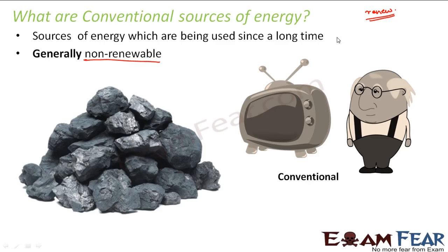For example, one good example of a conventional source is coal. Once you burn coal you get a lot of heat energy, but the coal that you have burnt is gone — you cannot recycle or reuse it. Suppose you have one kg of coal; if you burn 500 grams to get heat energy, those 500 grams are gone forever. So there is a chance that in the near or far future there may be no further stock of that source of energy.